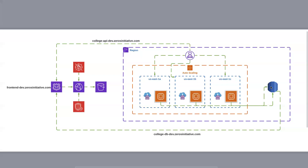The third deployment option builds upon containerization but uses Kubernetes clusters, giving you orchestration, scheduling capabilities, and all the advantages Kubernetes provides. In that case you can use EKS, which is Elastic Kubernetes Service — AWS's hosted Kubernetes service. The fourth option is to re-architect your application for serverless deployment using Lambda and API Gateway for your middleware.